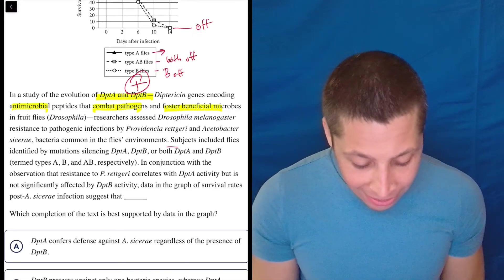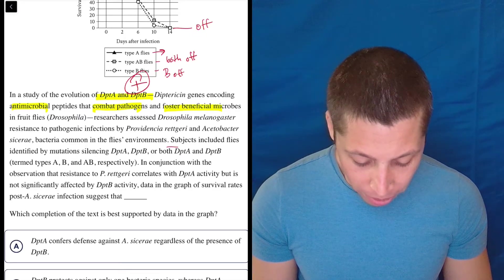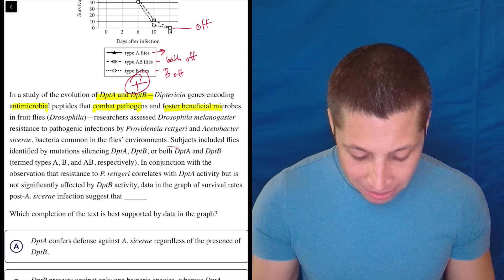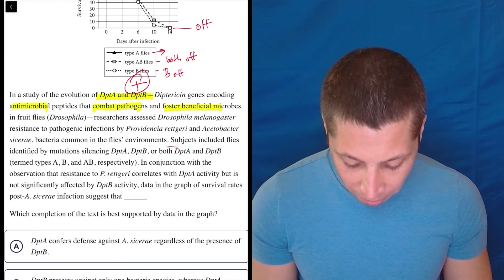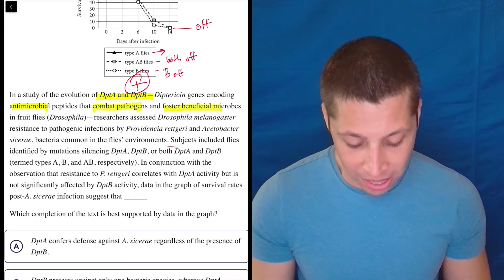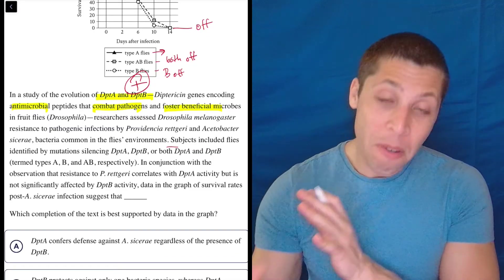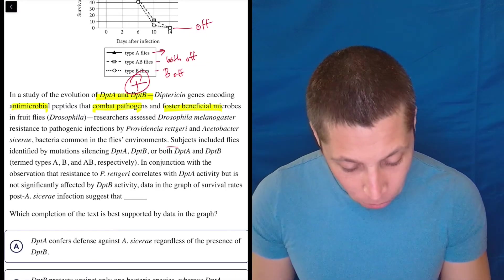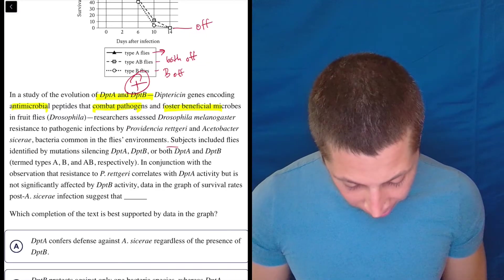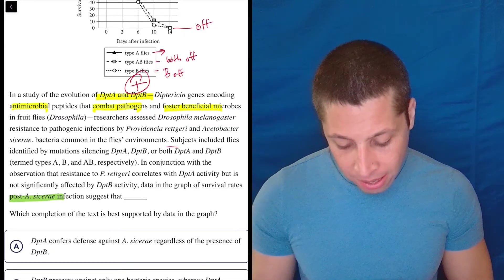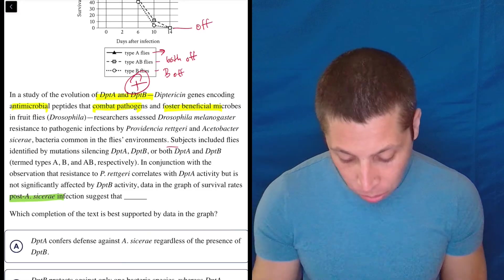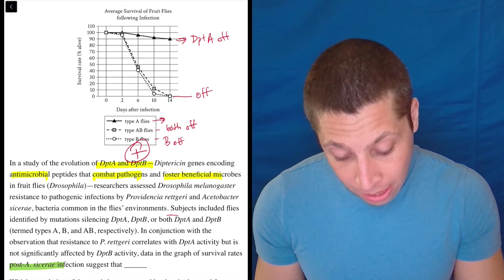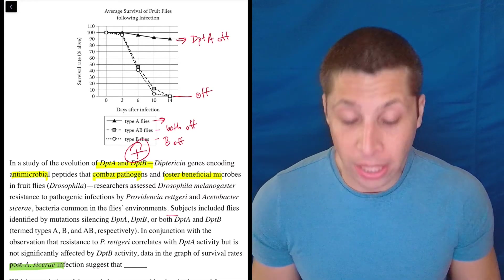So continuing: in conjunction with the observation that resistance to P. rettgeri correlates with DptA activity, but is not significantly affected by DptB activity, data in the graph of survival rates post-A. sicerae infection suggests that. So they just gave me a conclusion about one type of bacteria, but now we have a graph about a completely different one. So what I'm really focused on here is this end part: post-A. sicerae infection. So that's what this graph is about. It looks like if we are infecting them with that, the A ones, the type A flies are living and everything else is dying.